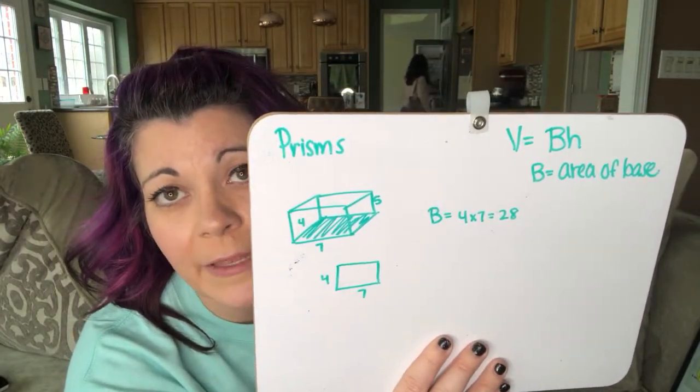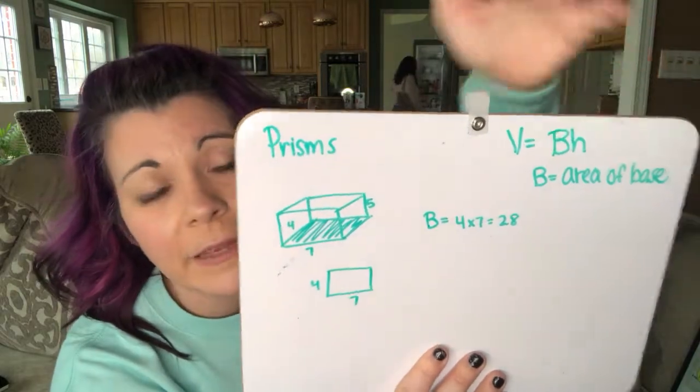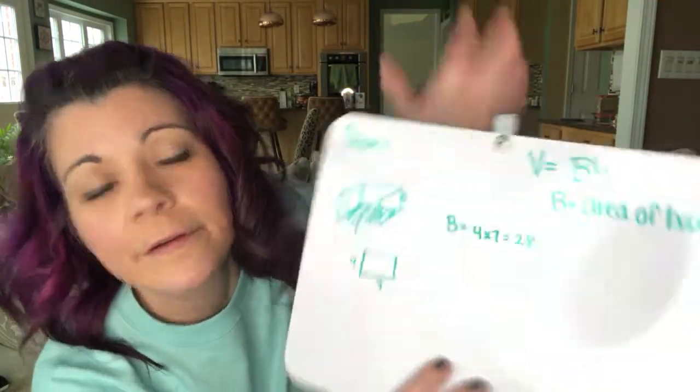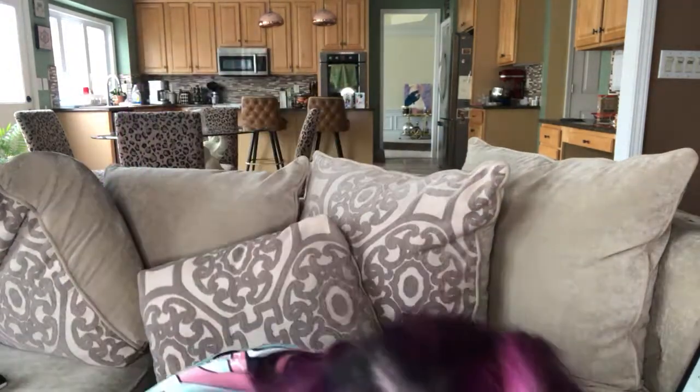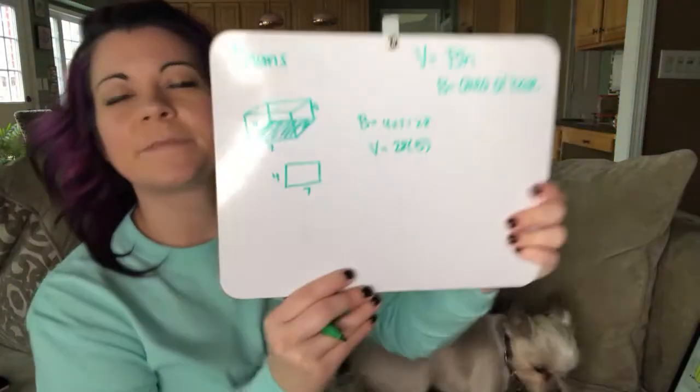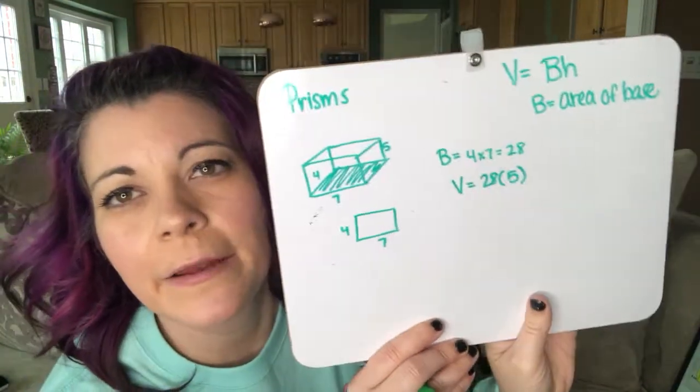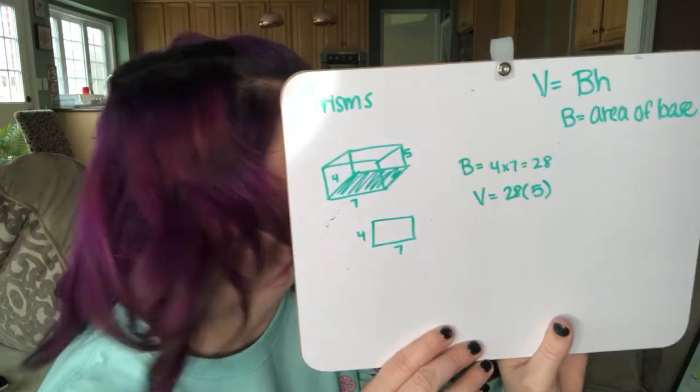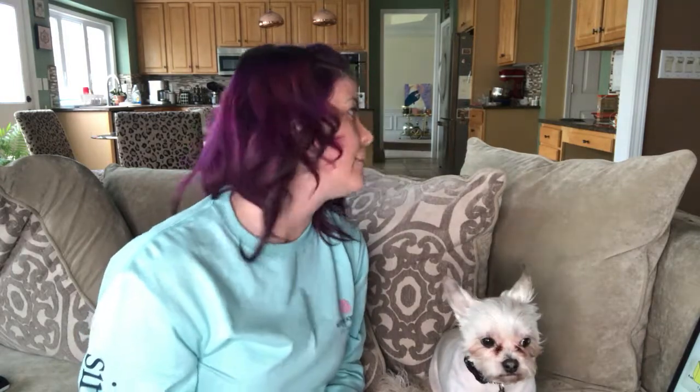So then we just plug that in for B, and then the H, the height of this prism, is five. So area of the base is 28, and then we multiply it by the height. 28 times five, which is 140 centimeters cubed.